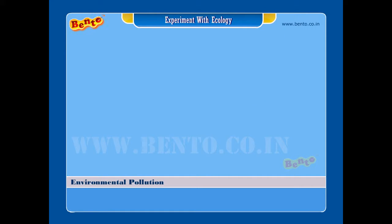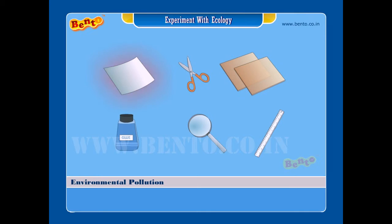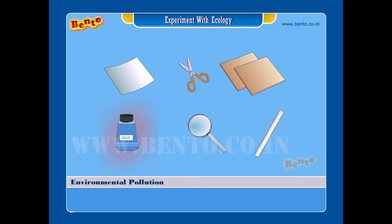Air pollution experiment. Aim: to study air pollution. Materials required: a sheet of white paper, scissors, two large and heavy cardboard pieces, gum or a glue stick, a magnifying glass, and a scale.